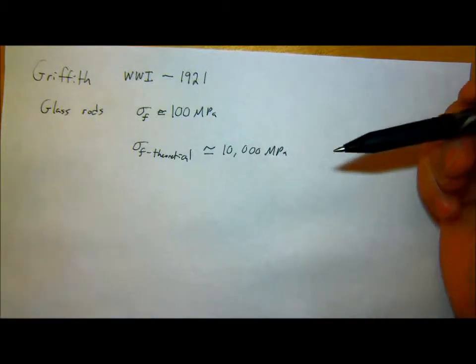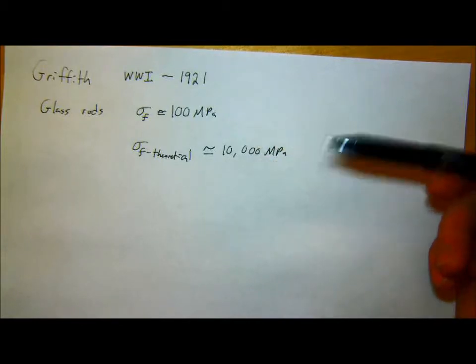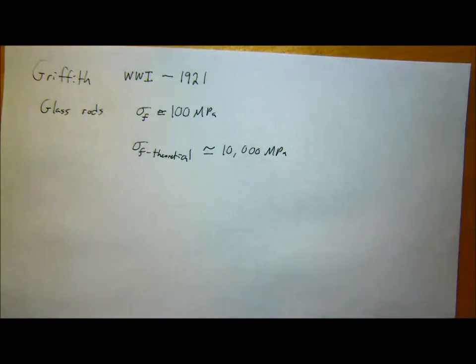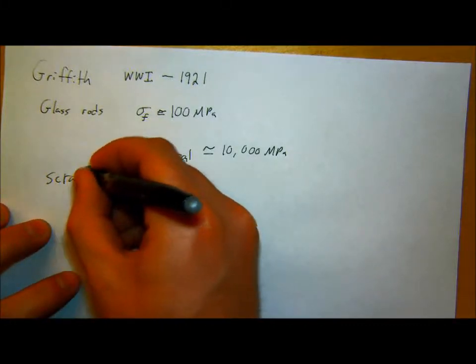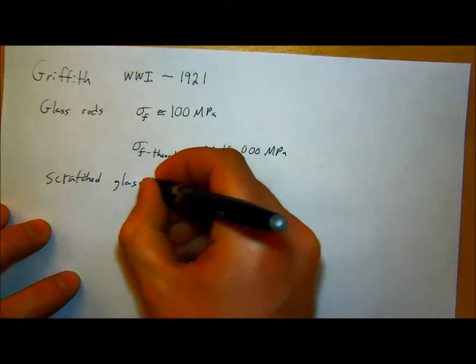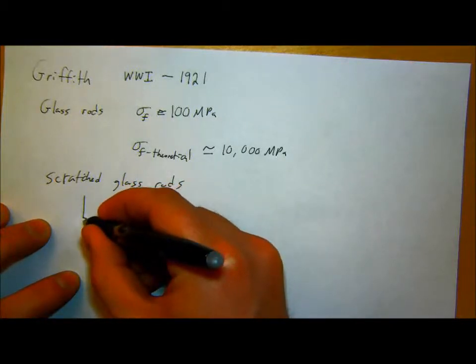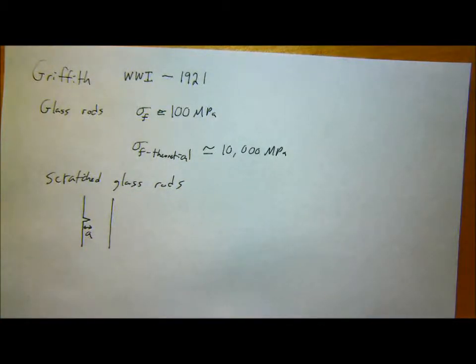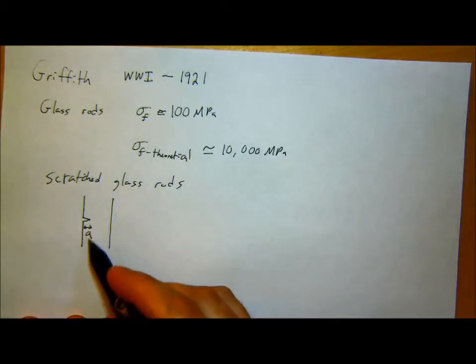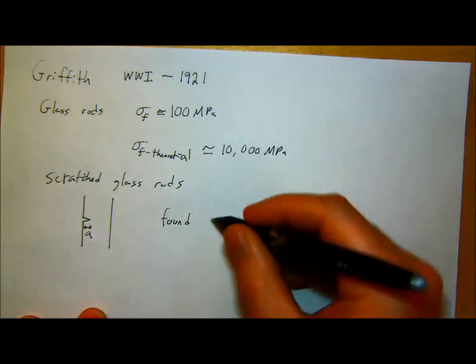But he knew, theoretically, from the strength, or the amount of stress you have to apply to break the atomic bonds between glass, theoretically this should be closer to about 10,000 MPa. So he saw this discrepancy. He said, okay, well, theoretically this is supposed to be like two orders of magnitude higher strength than what we're seeing. So what's going on? So he did an experiment where he took a whole bunch of glass fibers and glass rods and added a scratch to them.